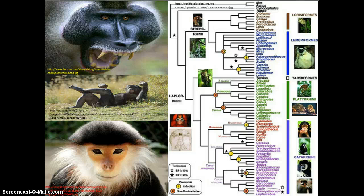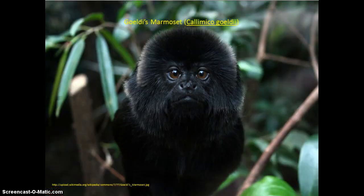Strepsirrhini is divided into two infra-orders, Lemuriformes and Lorisiiformes. And Haplorhini is divided into three infra-orders: Tarsiiformes, Platyrrhini, and Catarrhini. For the Calamico, we will continue down the line of Platyrrhini, which is divided into two families, Cebidae and Callitrichidae.